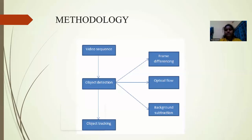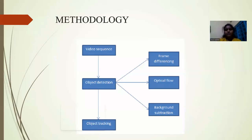After converting to grayscale, the gray frame is converted into a black-and-white threshold frame where we can find the object pixel size. When the pixel value is less than 30 it is shown in black, and when the pixel size is more than 30 it is shown in white — the white color indicates a moving object.